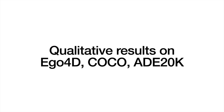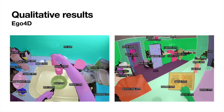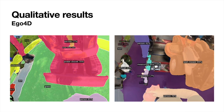We provide qualitative results of Odyssey on the EGO4D, COCO, and ADE20K datasets. EGO4D contains many egocentric videos covering a wide range of scenes and objects. Although it has a large domain gap to our training dataset, Odyssey can still segment and categorize each object correctly. For example, in the left figure, Faucet, and in the right figure, Grocery Bag, are not present in the training dataset and yet are recognized correctly by Odyssey. Similarly, Power Shovel and Lawn Mower are also novel categories.